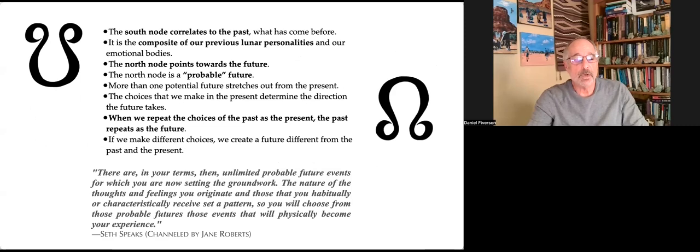The north node points towards the future, but the north node is a probable future. More than one potential future stretches out from the present. The choices that we make in the present determine the direction the future takes. When we repeat the choices of the past as the present, the past just repeats as the future. If we make different choices, we create a future different from past to present.